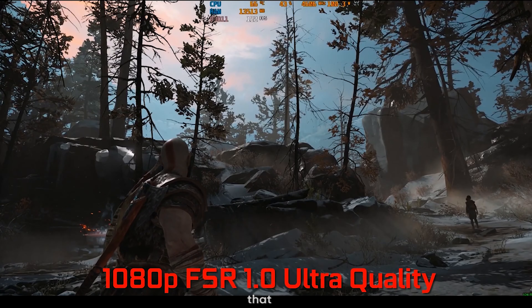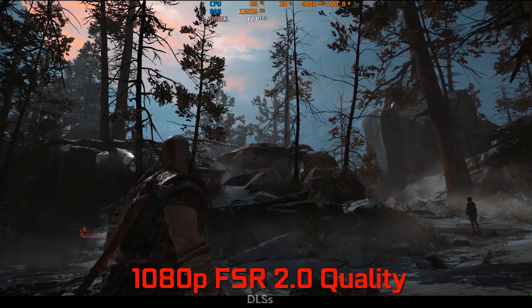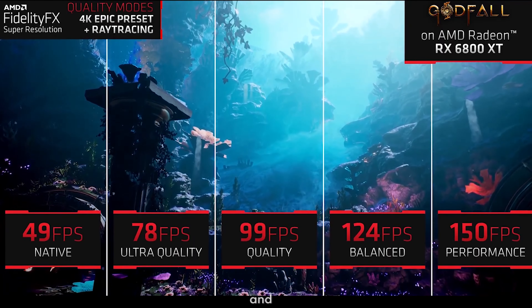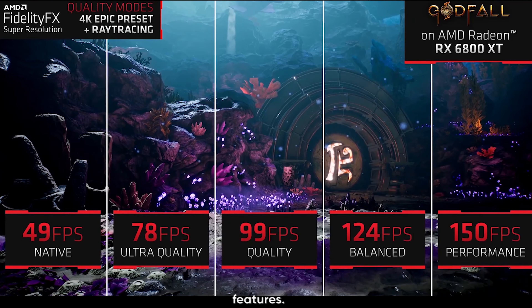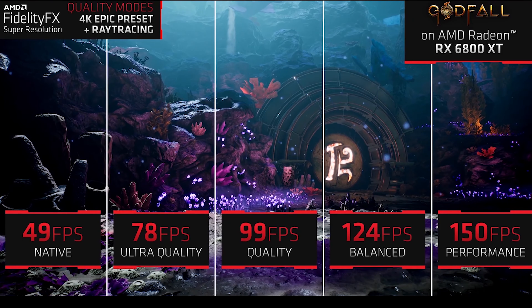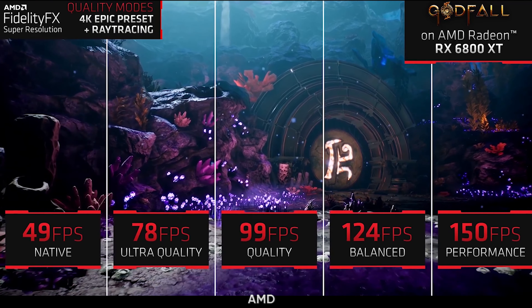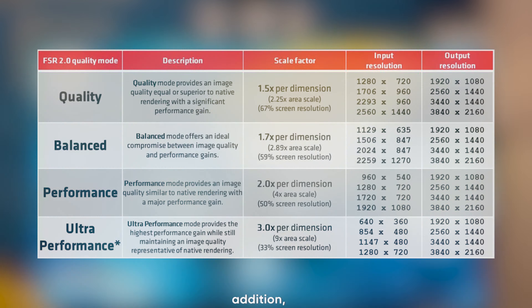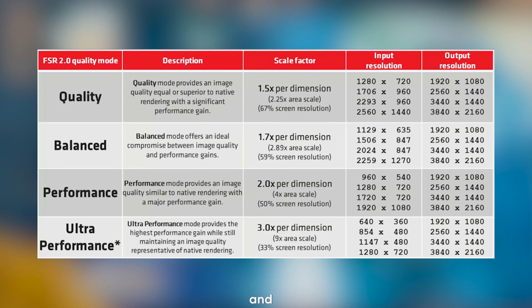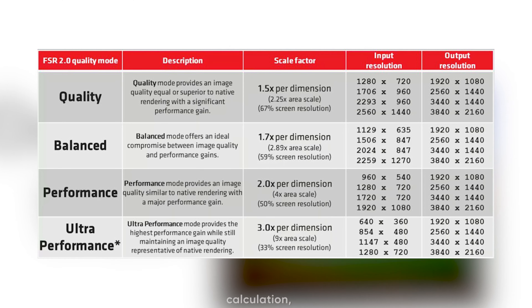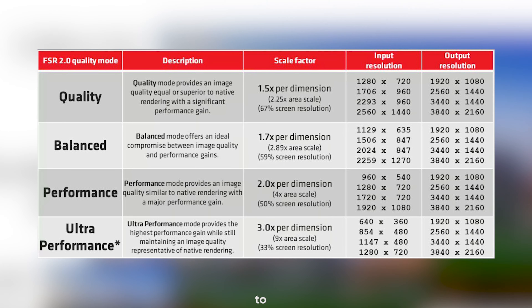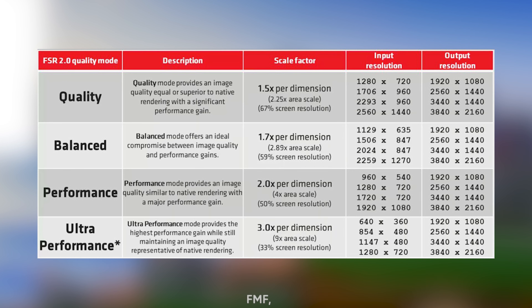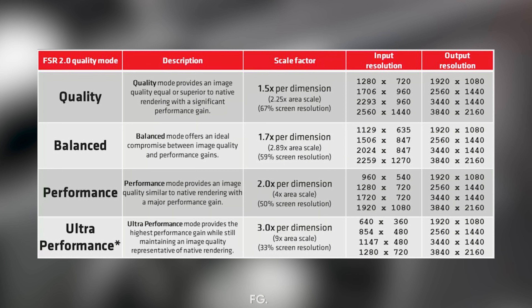It is noteworthy that both AMD FSR 3 and NVIDIA DLSS 3 must be integrated by developers into each game and are not independent driver features. Accordingly, some games support both upscalers, while others exclusively offer AMD FSR 3 or NVIDIA DLSS 3. In addition, both AMD FSR 3 and NVIDIA DLSS 3 implement inter-frame calculation, which allows frame rates to almost double. AMD calls this feature Fluid Motion Frames (FMF), and NVIDIA calls it Frame Generation (FG), and these features are exclusive to FSR 3 and DLSS 3.